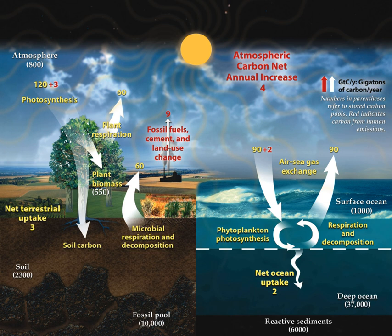It is strongest in the Northern Hemisphere because this hemisphere has more land mass than the Southern Hemisphere and thus more room for ecosystems to absorb and emit carbon. Carbon leaves the terrestrial biosphere in several ways and on different time scales. The combustion or respiration of organic carbon releases it rapidly into the atmosphere. It can also be exported into the ocean through rivers or remain sequestered in soils in the form of inert carbon. Carbon stored in soil can remain there for up to thousands of years before being washed into rivers by erosion or released into the atmosphere through soil respiration.